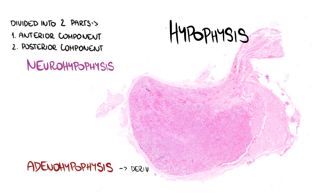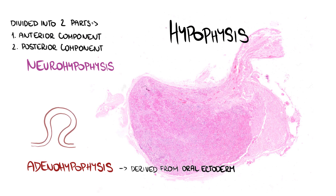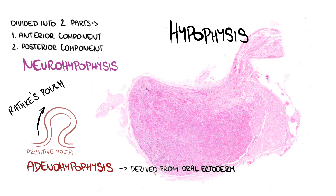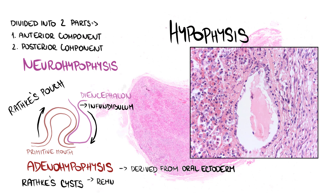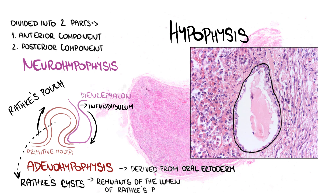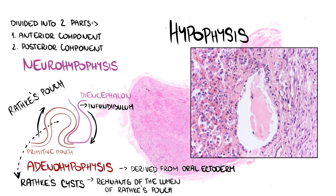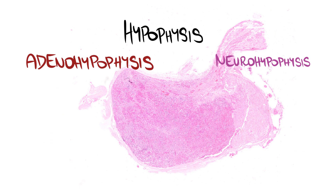Embryologically, adenohypophysis is derived from oral ectoderm, which gives rise to an outpouching from the roof of the primitive mouth, grows cranially, and forms a structure called Rathke's pouch. Neurohypophysis is derived from the floor of the diencephalon, grows caudally, and remains attached to the brain by a structure called infundibulum. We can find cysts called Rathke's cysts as remnants of the lumen of Rathke's pouch. In this video we'll focus on the structure and function of the anterior part of the gland, the adenohypophysis.